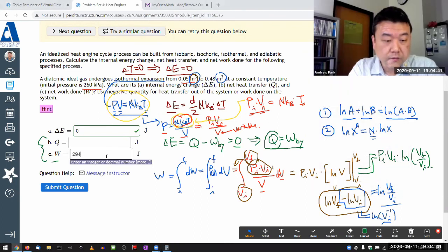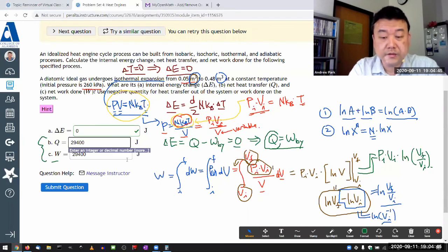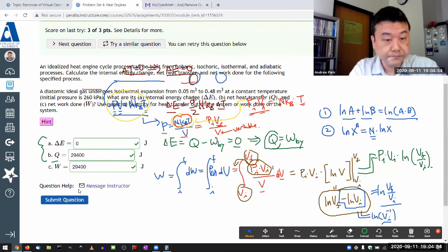And the heat transfer should be exactly the same, so that when you calculate this term's difference, you get 0. So that's it, isothermal process.